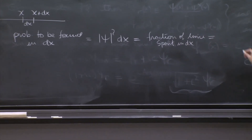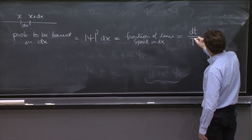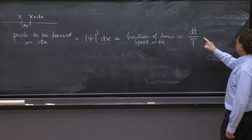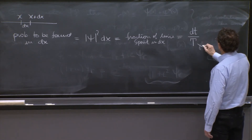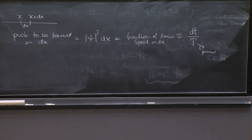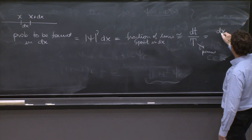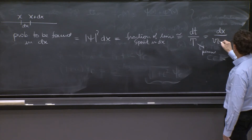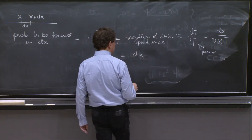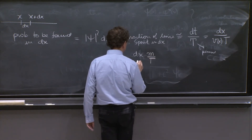The fraction of time spent in dx equals the little time dt over the period T of the classical oscillation. That fraction is approximately dx divided by v(x), the position-dependent velocity, over T. It's approximate — a classical intuition expressed as the correspondence principle. The velocity is p over m, so this gives us m times dx divided by the period T times the momentum p(x).